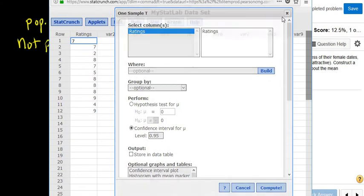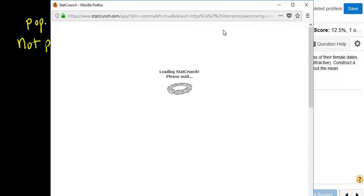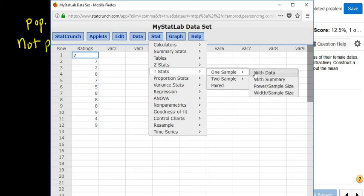Let me do that again. So from scratch, click the little box, click open in StatCrunch. Okay, then you go to stat, t one sample with data.